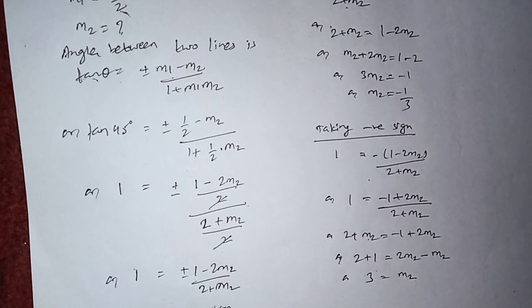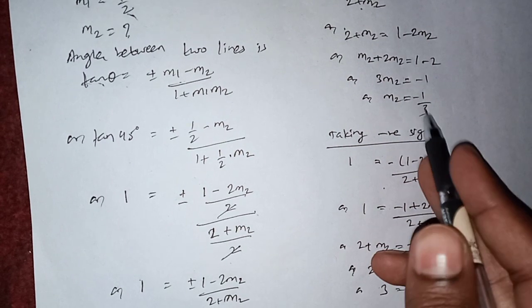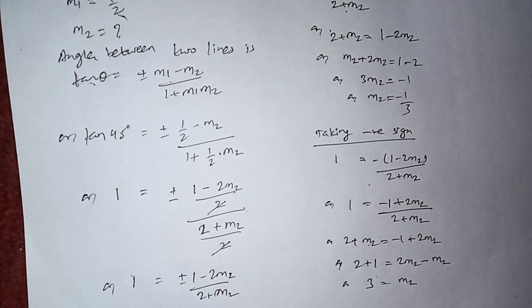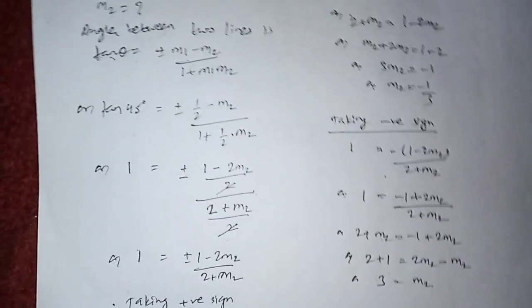Therefore we can say slope m2 will be either minus 1 by 3 or 3. So minus 1 by 3 or 3. This is the required solution.